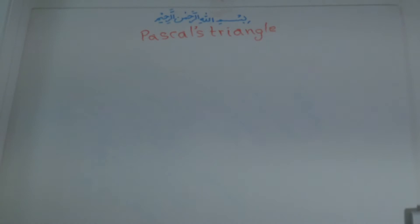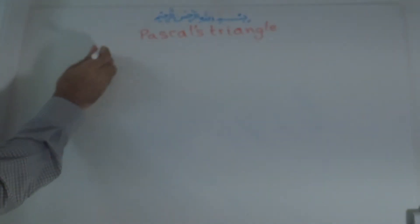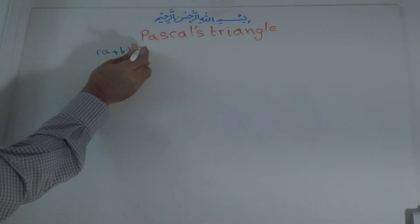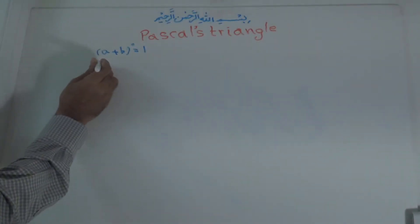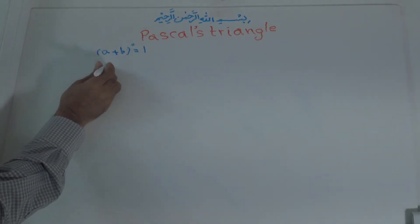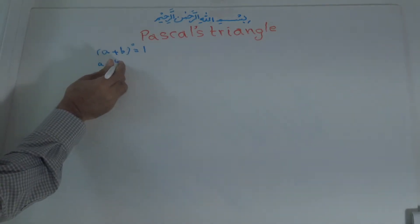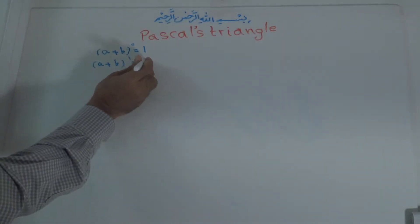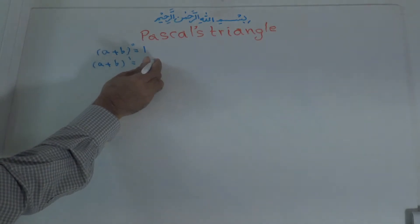If you see the binomials, the exponents, the binomials, for example, a plus b to the power of 0 is equal to 1. And a plus b to the power of 1 is equal to a plus b.